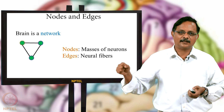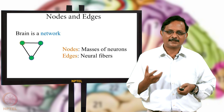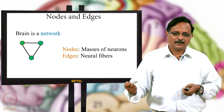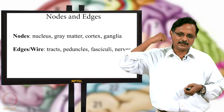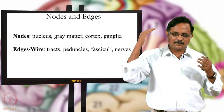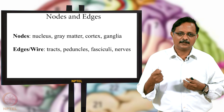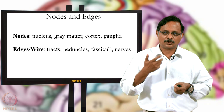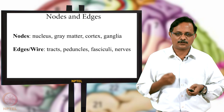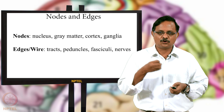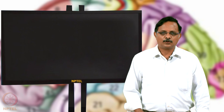The brain is essentially a large network of neurons — with nodes and edges. The nodes are masses of neuron cell bodies, known as nuclei when deep inside the brain, gray matter, or the cortex (a 2–5 mm thick sheet of neurons on the brain surface). Ganglia are small neuron masses in the autonomic system. The edges or wires go by many names: tracts, peduncles, fasciculi, nerves, and so on.